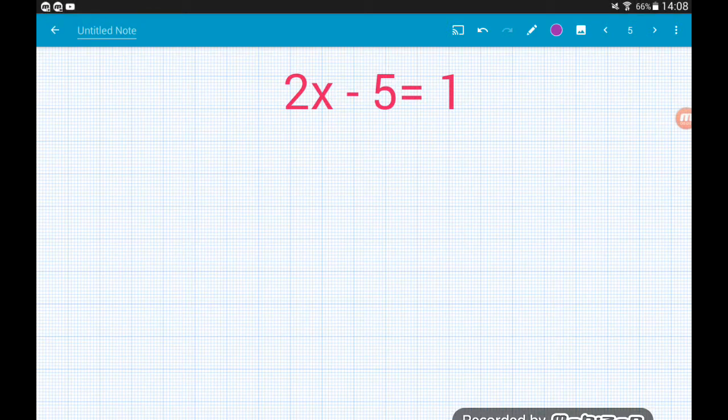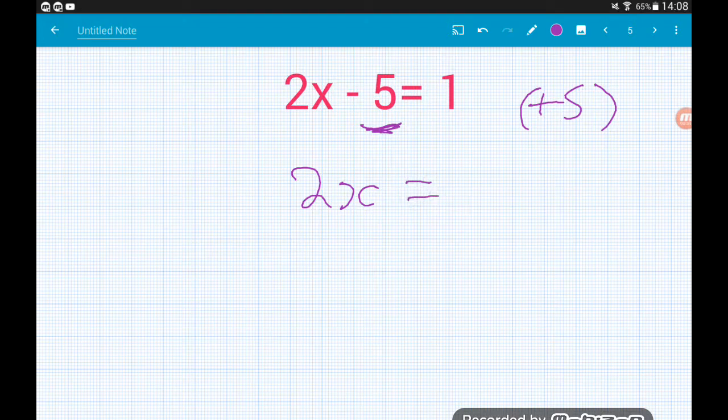We've got 2x minus 5 equals 1. What we always want to do is move the number that has absolutely nothing to do with our x term first. So if that's a minus 5 to move him we're going to add 5. That gives us 2x equals 1 plus 5 which is 6. Now we've got 2 times our number equals 6. The opposite of multiplying by 2 is dividing by 2.